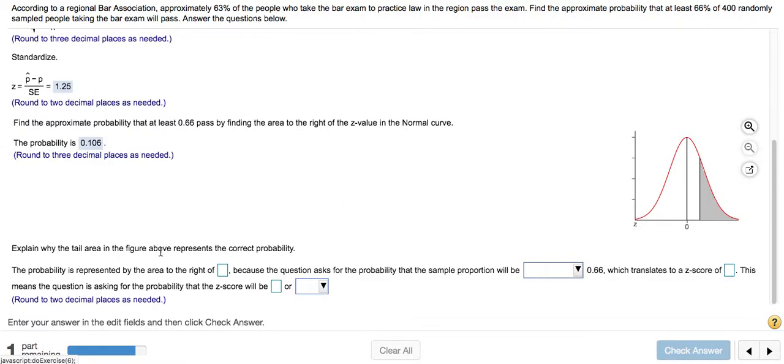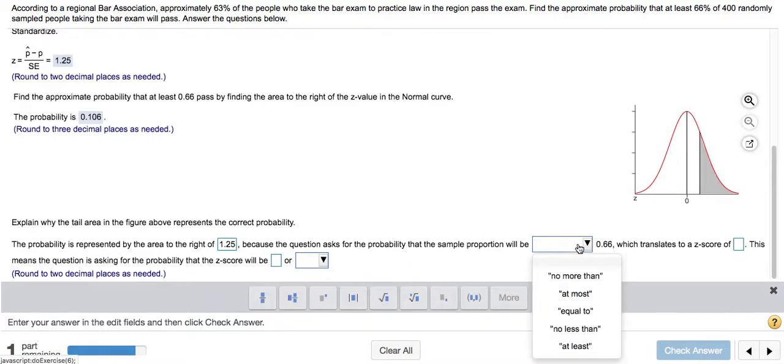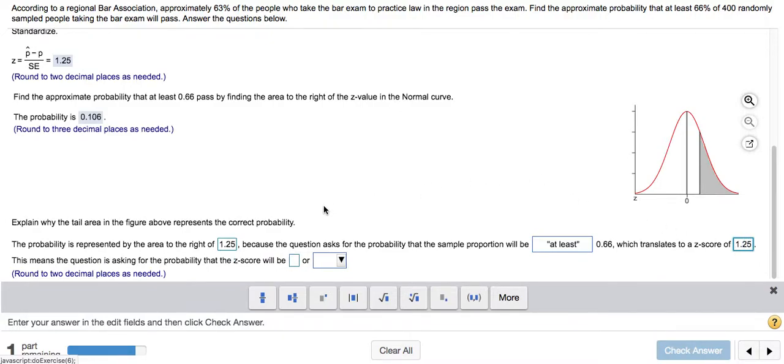So explain why the tail area in the figure above represents the correct probability. The probability is represented by the area to the right of the z-score, which was 1.25, because the question asks for the probability that the sample proportion will be at least 0.66, which translates to a z-score of 1.25. This means the question is asking for the probability that the z-score will be greater than 1.25.